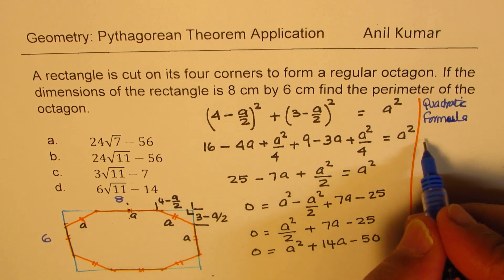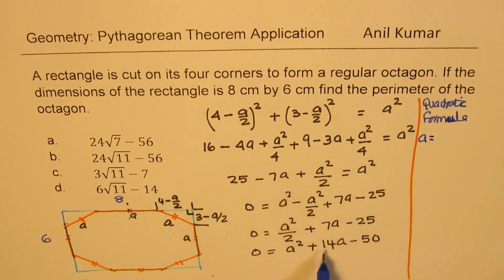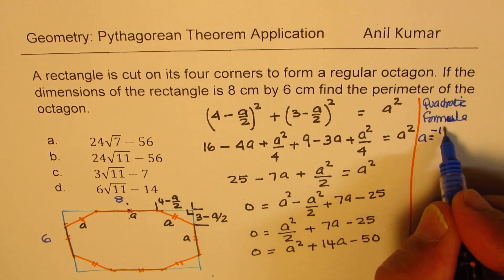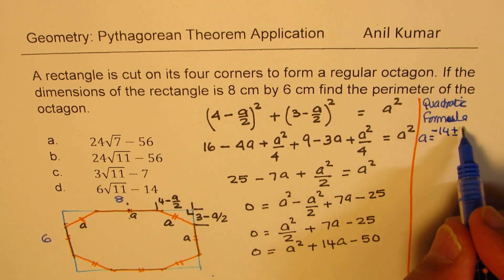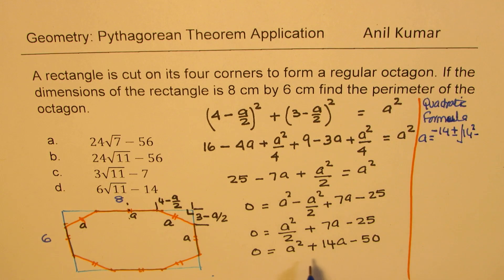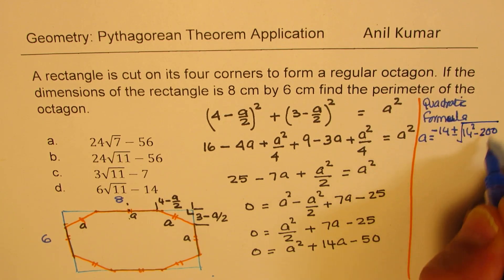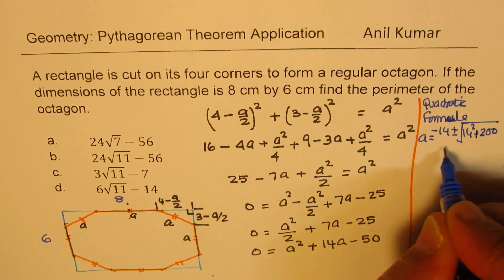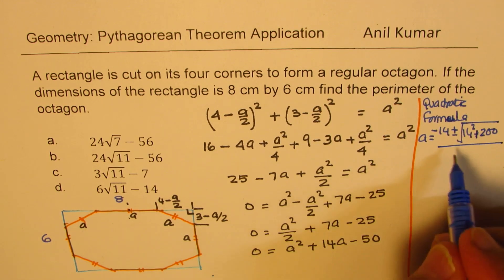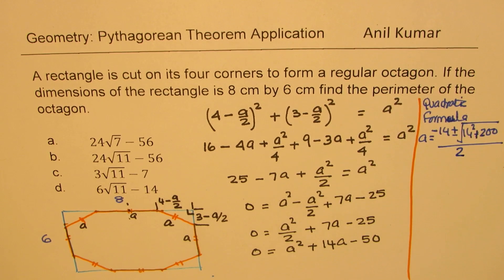So that gives you A as equal to minus B, which is minus 14, plus minus B square, 14 square, minus 4AC. A is 1, so it is like 4 times 50, which is 200. And minus minus makes it plus, divided by 2 times A, which is 2 for us.